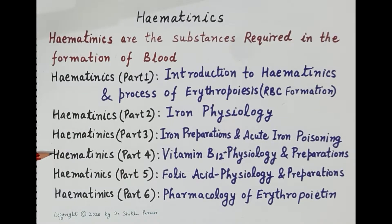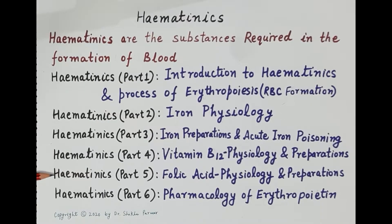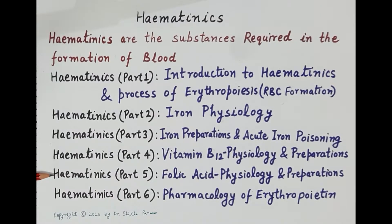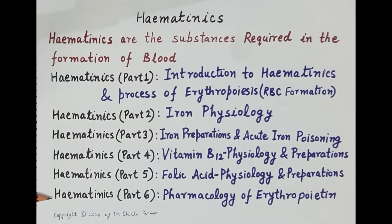The fourth video deals with the physiology of vitamin B12 — absorption, transport, metabolism, physiological functions, and oral and parenteral preparations. The fifth video covers physiology of folic acid and its oral and parenteral preparations. The sixth and last video covers the pharmacology of erythropoietin, a hormone produced by the kidneys, and its role in the formation of RBCs.